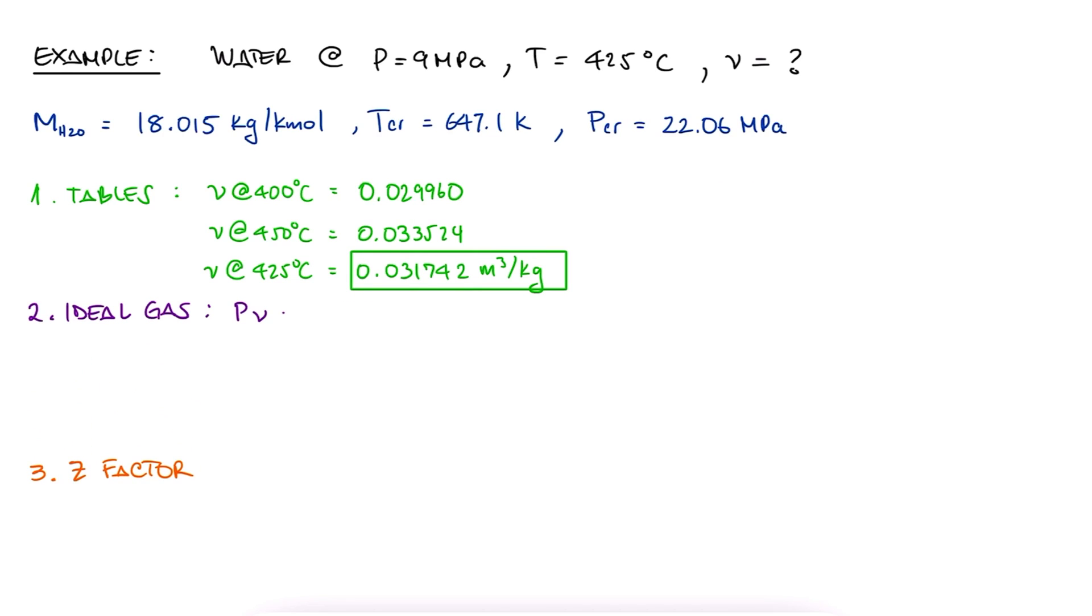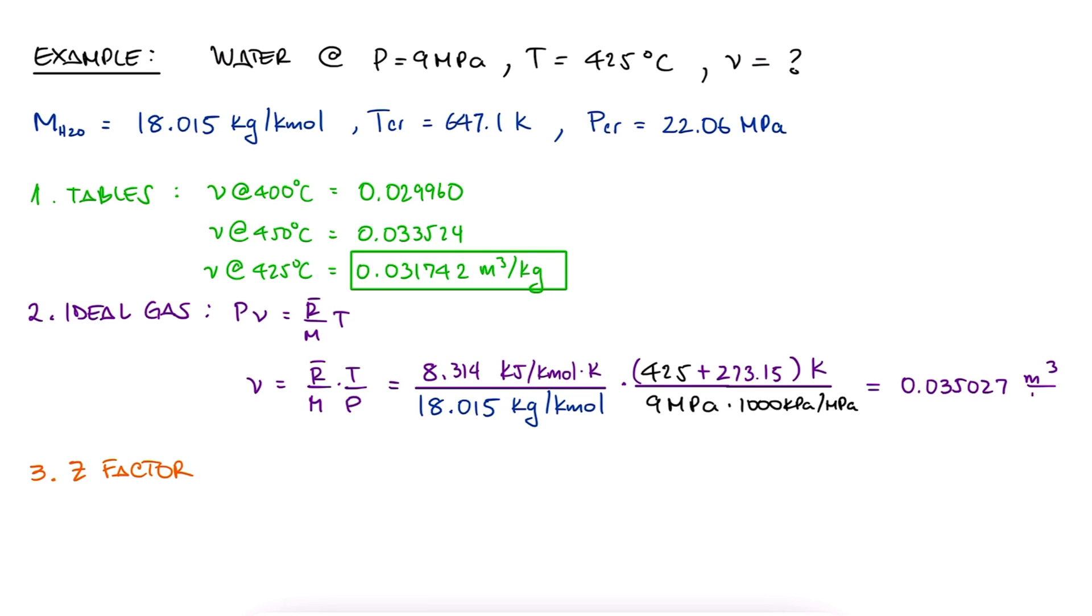If we're using the ideal gas equation, with no correction factors, V is R bar over molar mass times T over P. We plug in all the values that we were given, making sure units are correct, and we find that V is 0.035027. Not great.